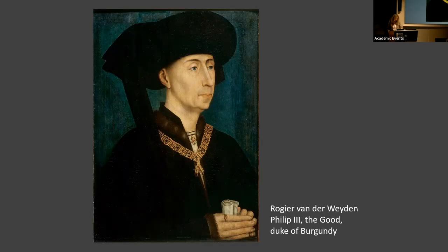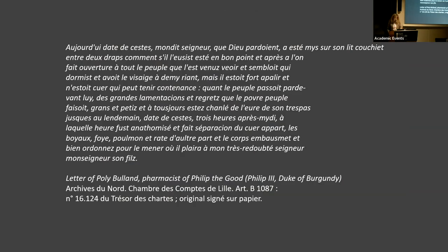With regard to the death of Philip the Good, who died on the 15th of June 1467 in his town palace in Bruges, the most important document is a letter written by a certain Paulie Boulon, pharmacist and citizen of Lille. Boulon was a very successful pharmacist who was present at the death of that prince. That document was written on the 16th of June, only one day after the death of the Duke.